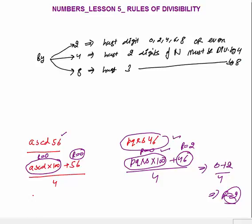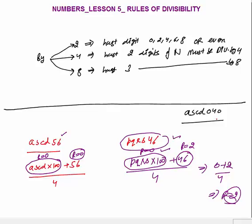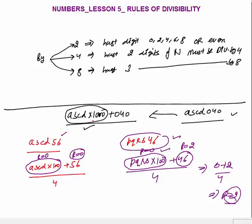Why? Take the number ABCD040. Is this divisible by 8? Yes, because the last three digits are 040. If you divide 040 by 8, it is completely divisible. You don't need to check A, B, C, D, because you can write this as ABCD × 1000 + 040. ABCD × 1000 is always divisible by 8 because 1000 is divisible by 8, so the remainder is 0. Whatever the value of A, B, C, D, it does not matter. So whenever you check divisibility by 8, only the last three digits matter.